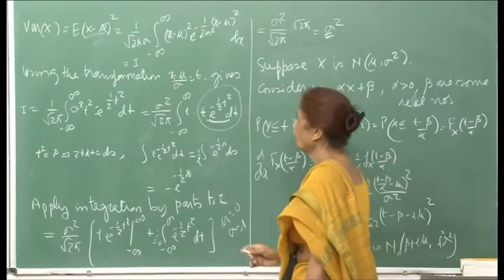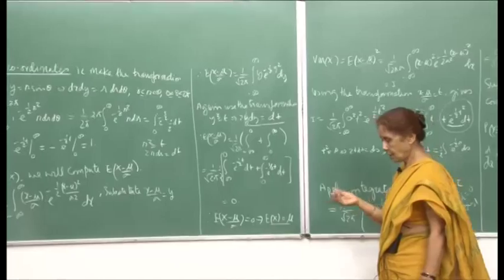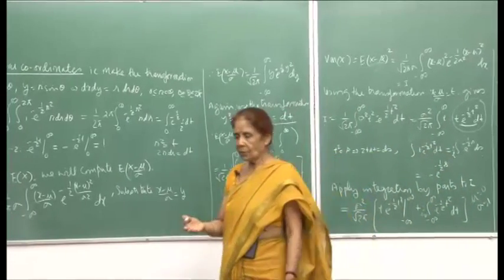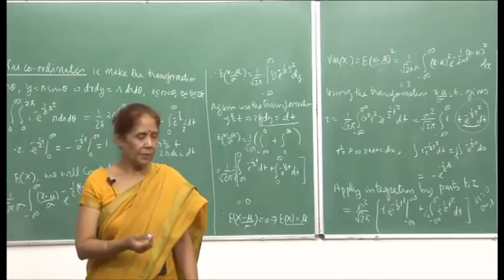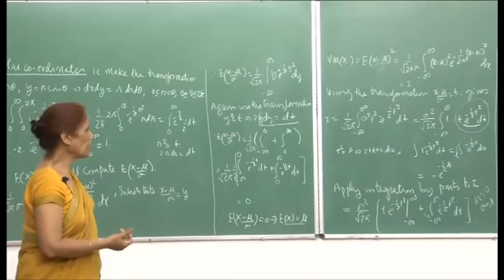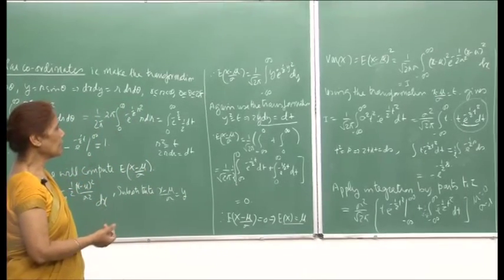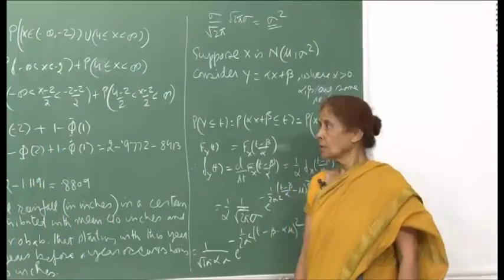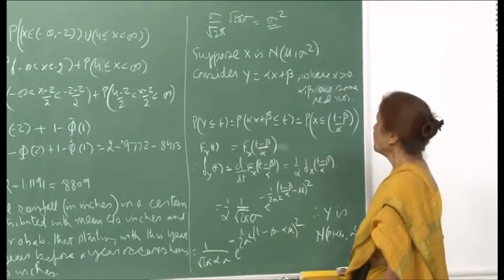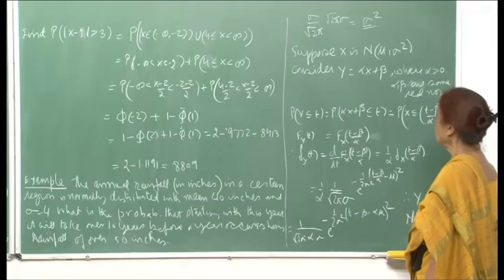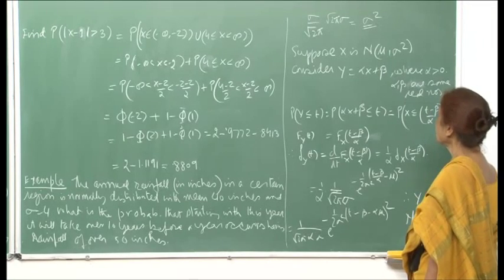Therefore, the parameters are now very clear: when we say normal(μ, σ²), μ is the mean and σ² is the variance. So we just saw that for the normal distribution, the parameter μ is the mean and σ² is the variance.